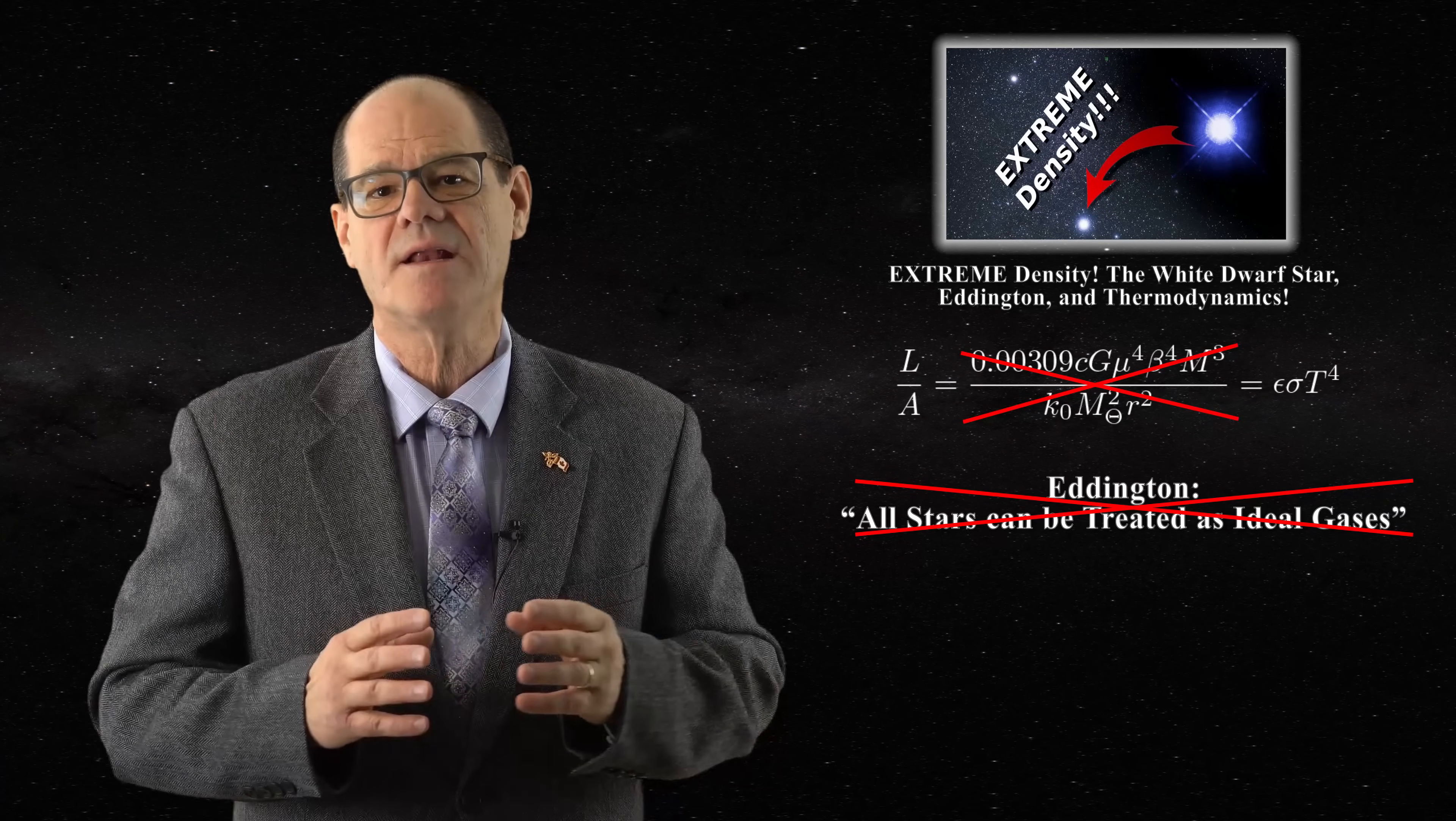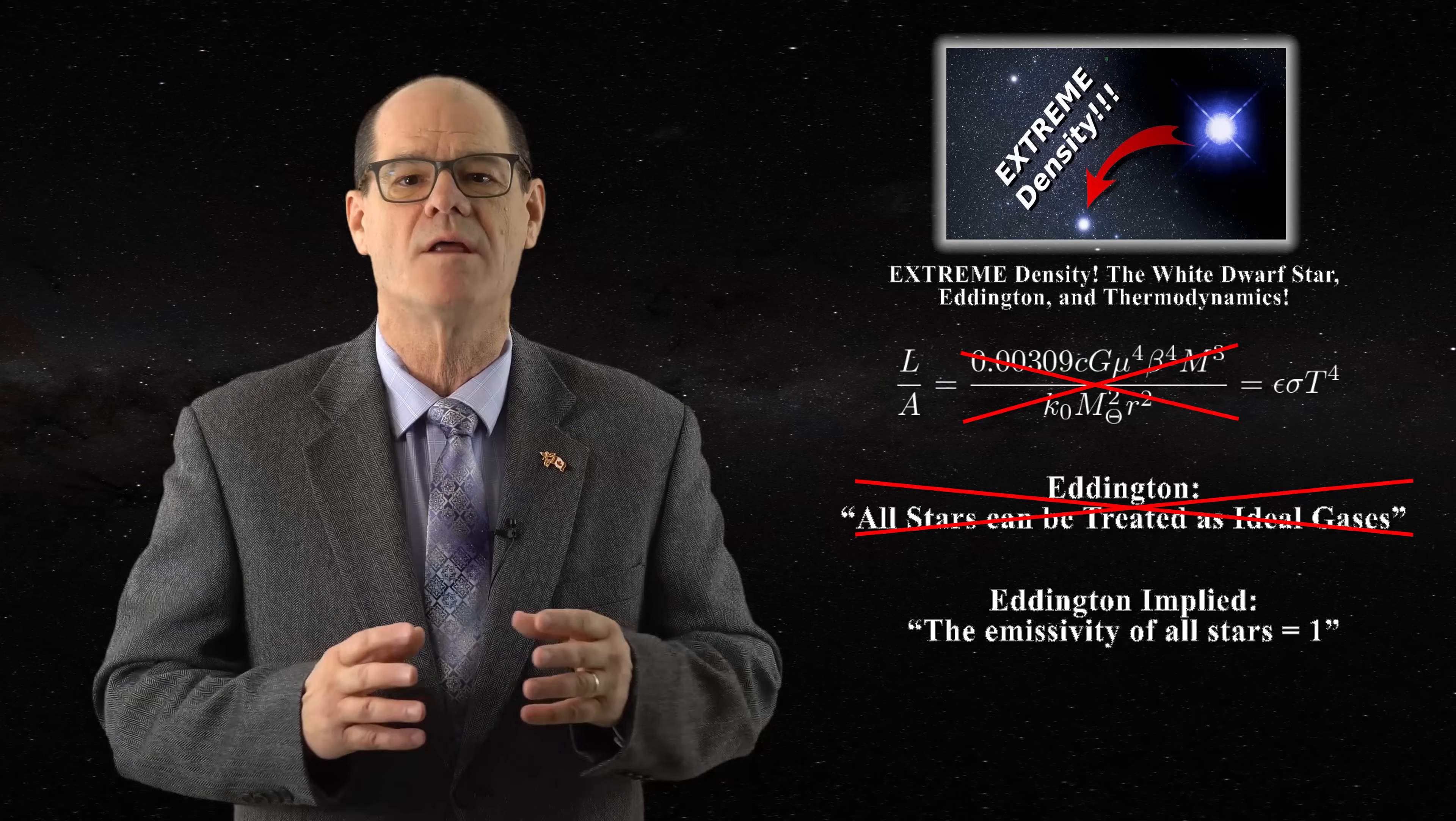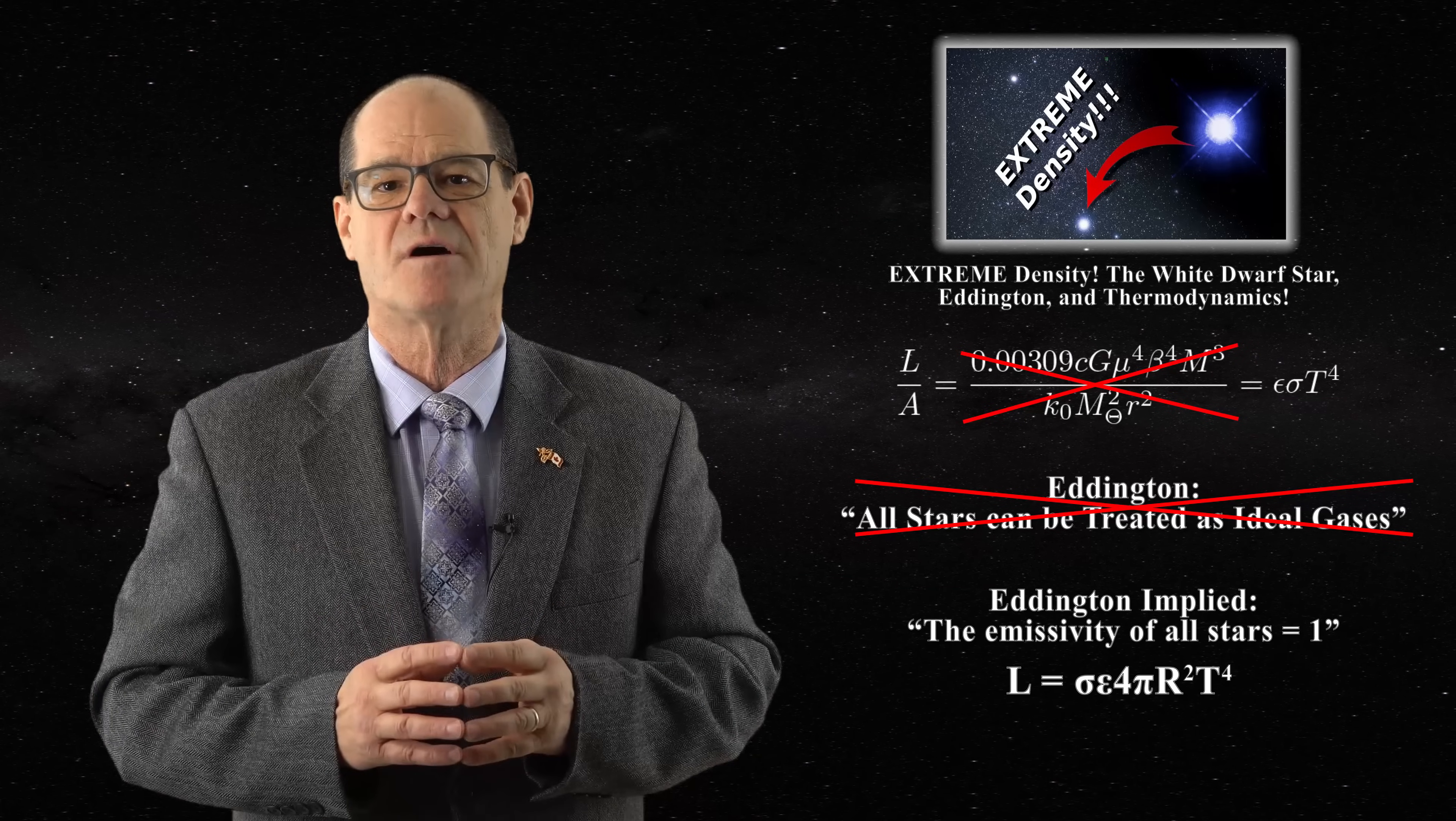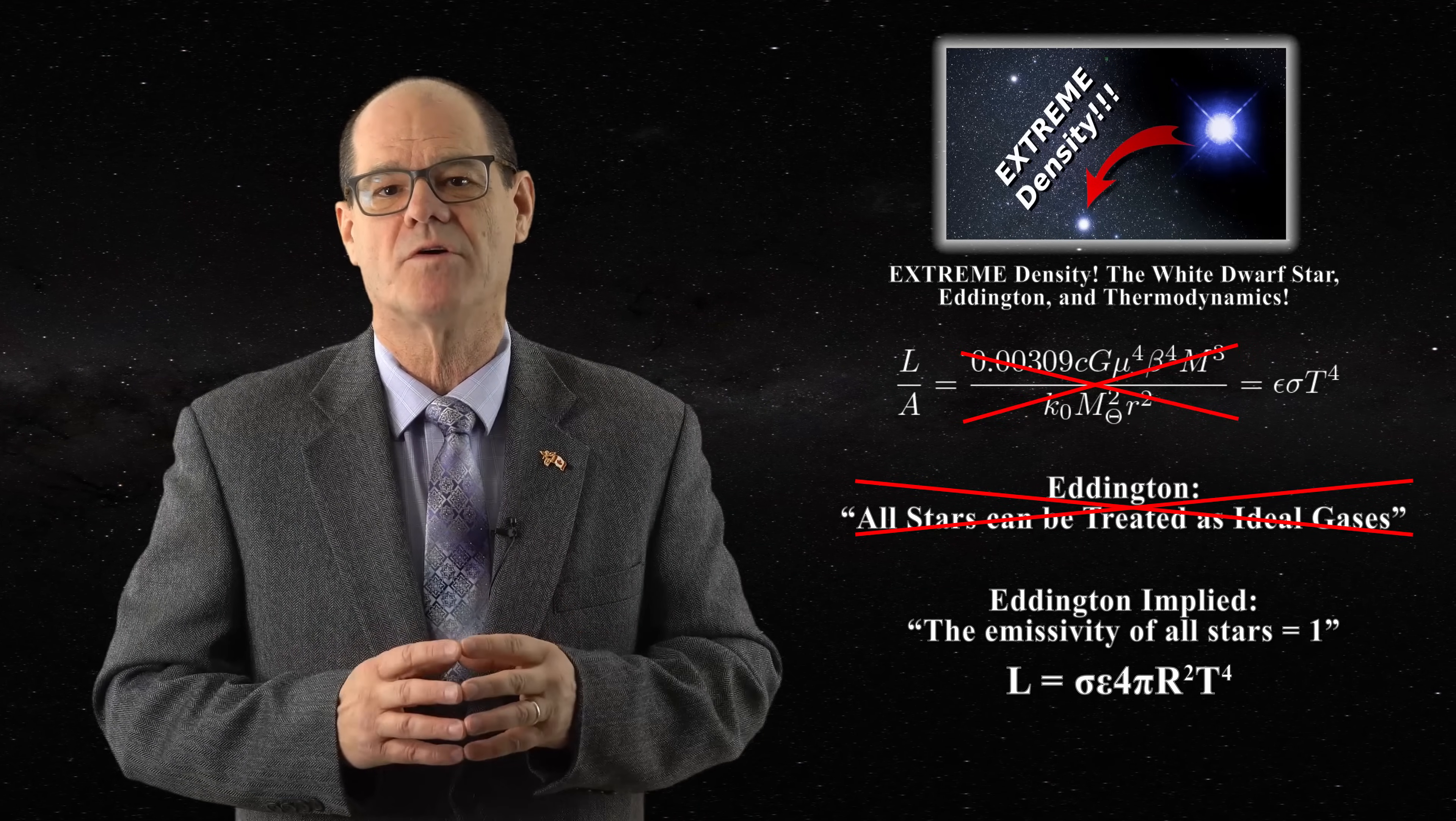Secondly, Eddington quietly insisted that he could set the emissivity of all stars to one. Therefore, he was left with radius as the only means to lower the luminosity of a star. This faulty logic created hyperdense white dwarfs.